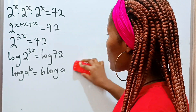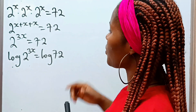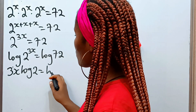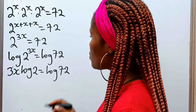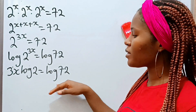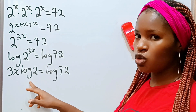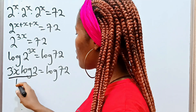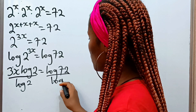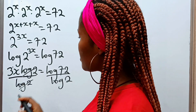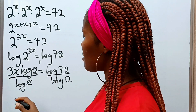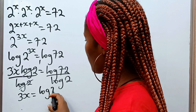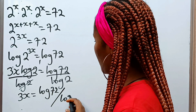So that means we can rewrite this as 3x multiplied by log 2 is equal to log 72. Now let us divide both sides of this equation by log 2, since we are looking for the value of x. So we divide both sides by log 2. Log 2 divides itself to give us 1, so we have 3x is equal to log 72 divided by log 2.